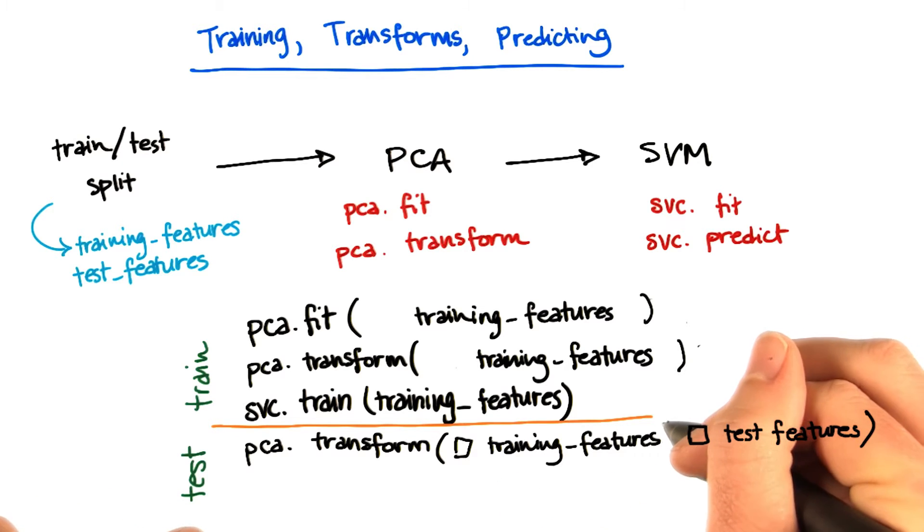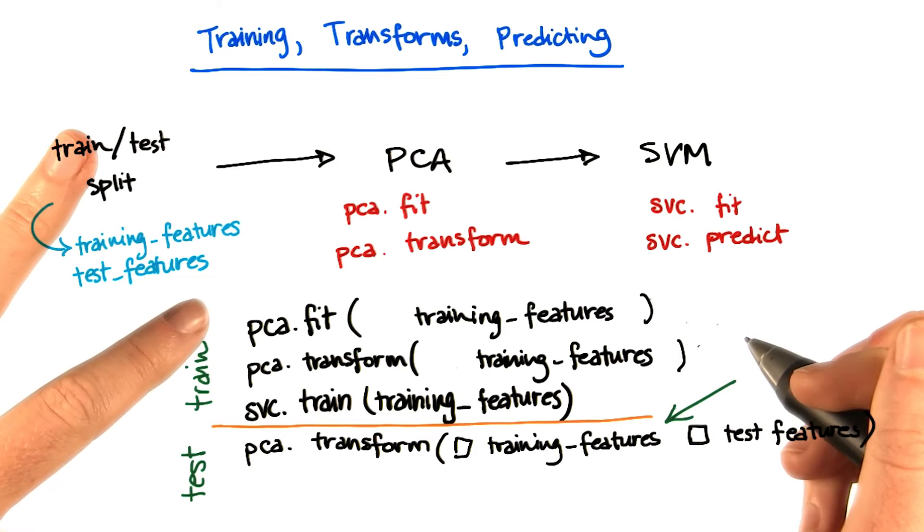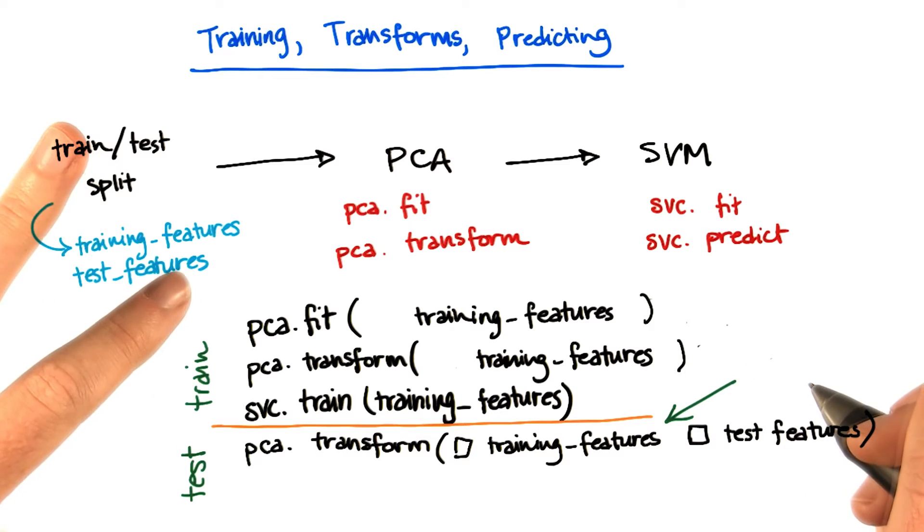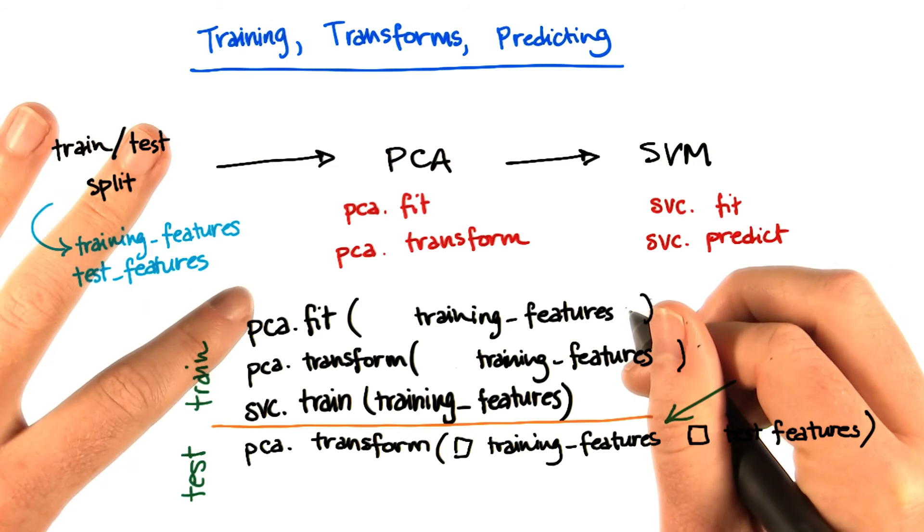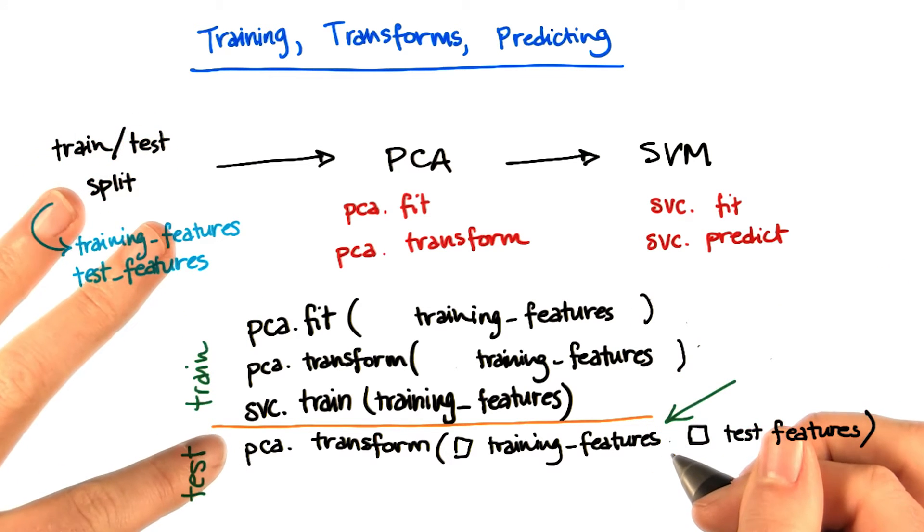Something very important that I'm not doing here is refitting my PCA on my test features. I want to be very consistent between what I've done with the training features and what I'll be doing with the testing features here.